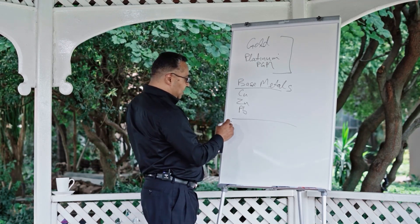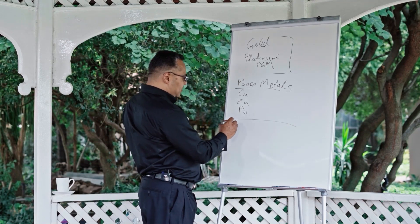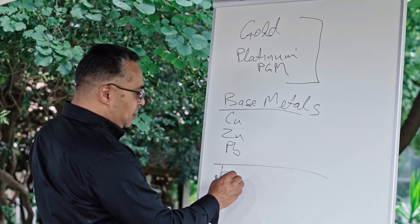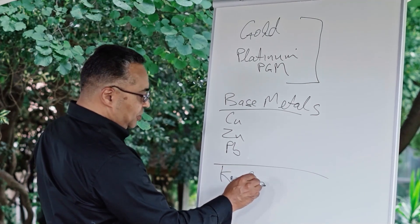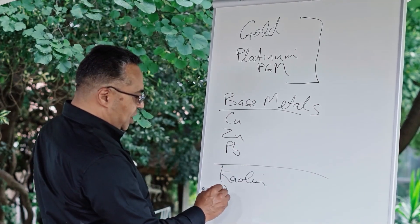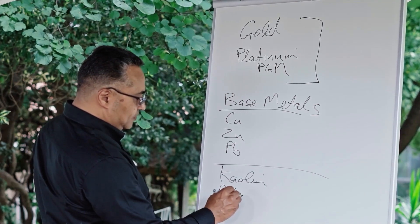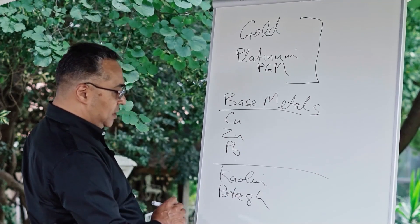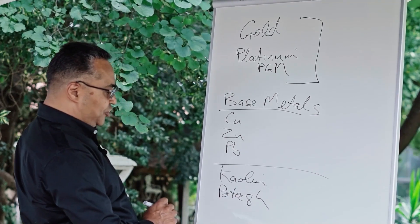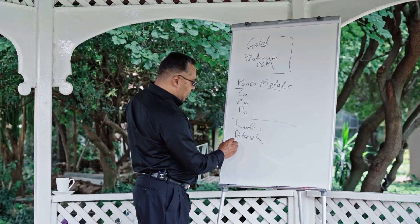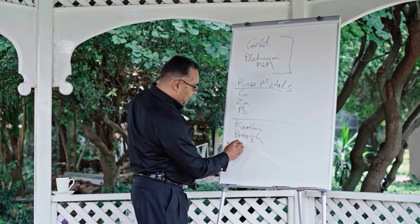And last but not least, industrial minerals such as kaolin, which is a clay; potash, which is used in the fertilizer industry; and fluorspar.